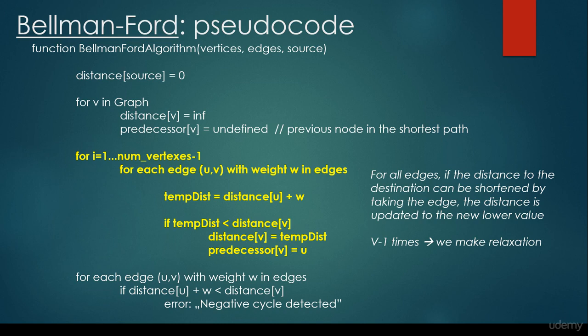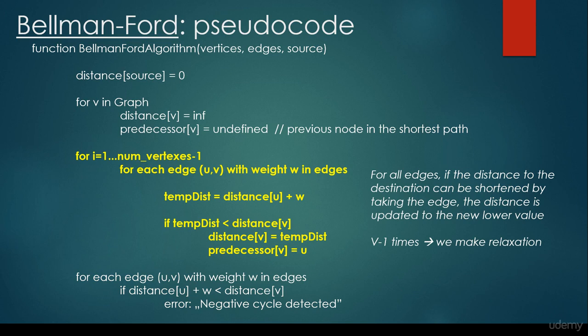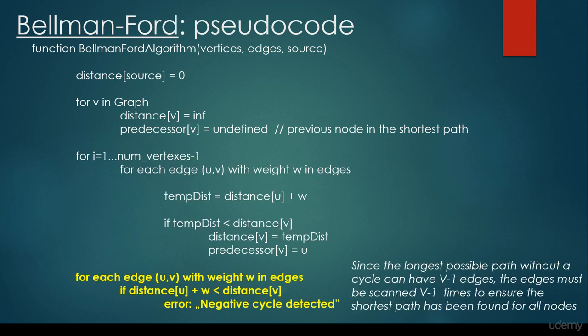And it's very important that this is the last step for Bellman-Ford algorithm. We have to make another check whether there is a negative cycle or not. Since the longest possible path without a cycle can have V minus 1 edges, and we make V minus 1 iterations here, so the edges must be scanned V minus 1 times to ensure the shortest path has been found for all nodes.